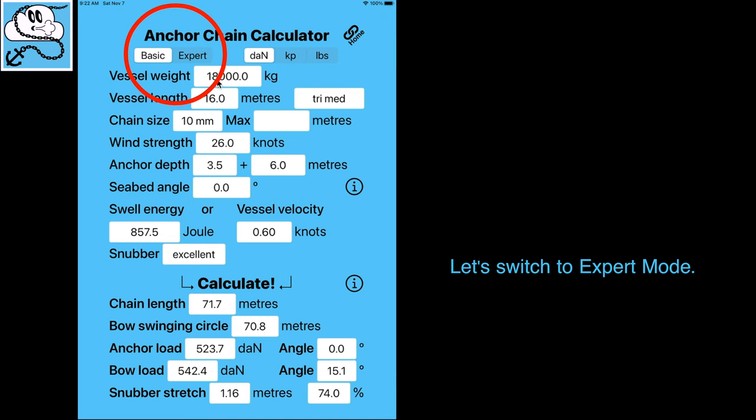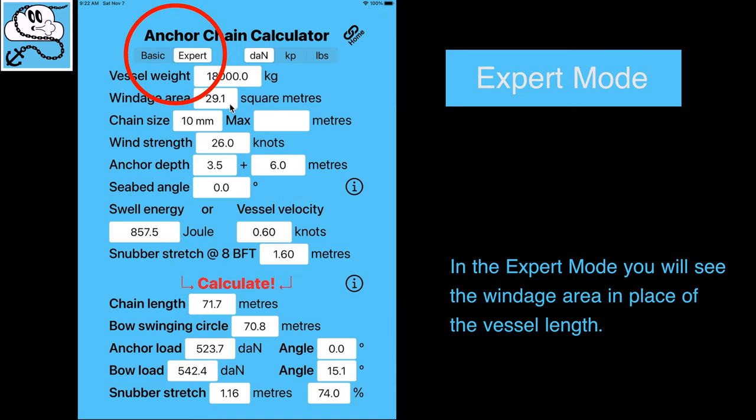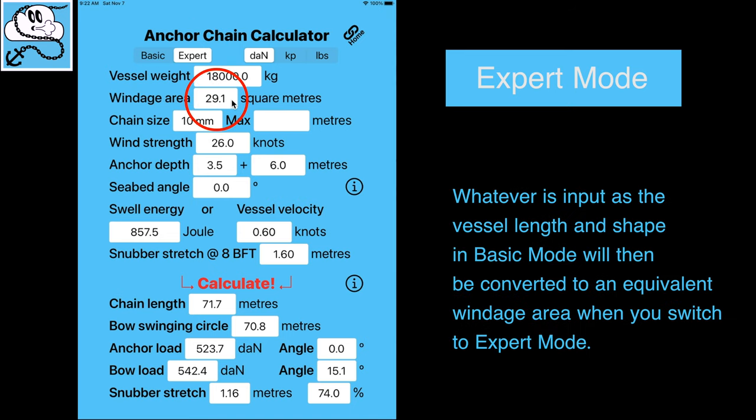Let's switch to Expert Mode. In the Expert Mode, you will see the windage area in place of the vessel length. Whatever is input as the vessel length and shape in Basic Mode will then be converted to an equivalent windage area when you switch to Expert Mode.